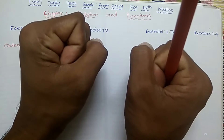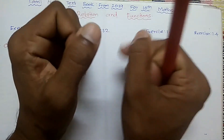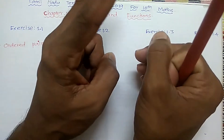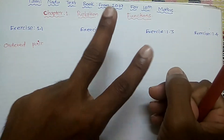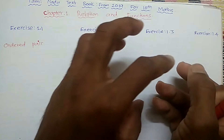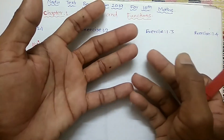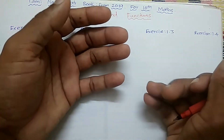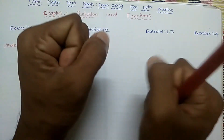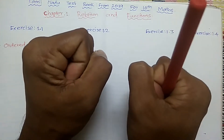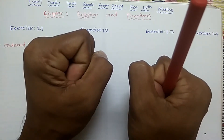This is ordered pairs. The pair is 2. If you join a group, it is ordered pairs.